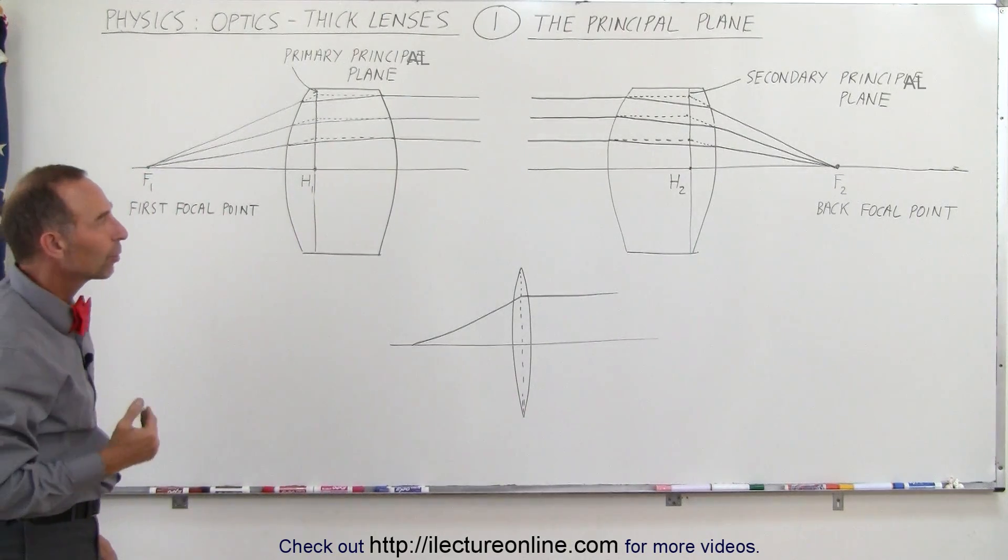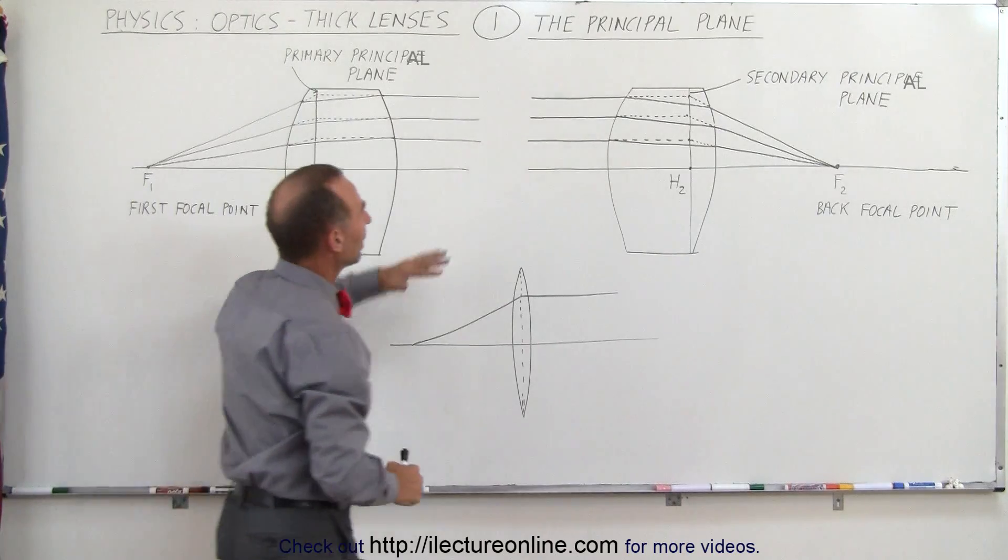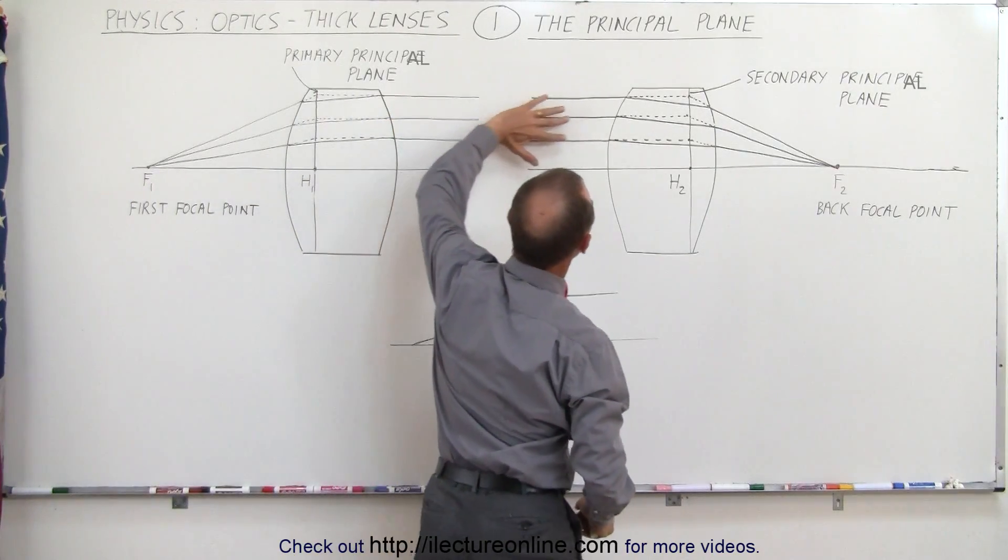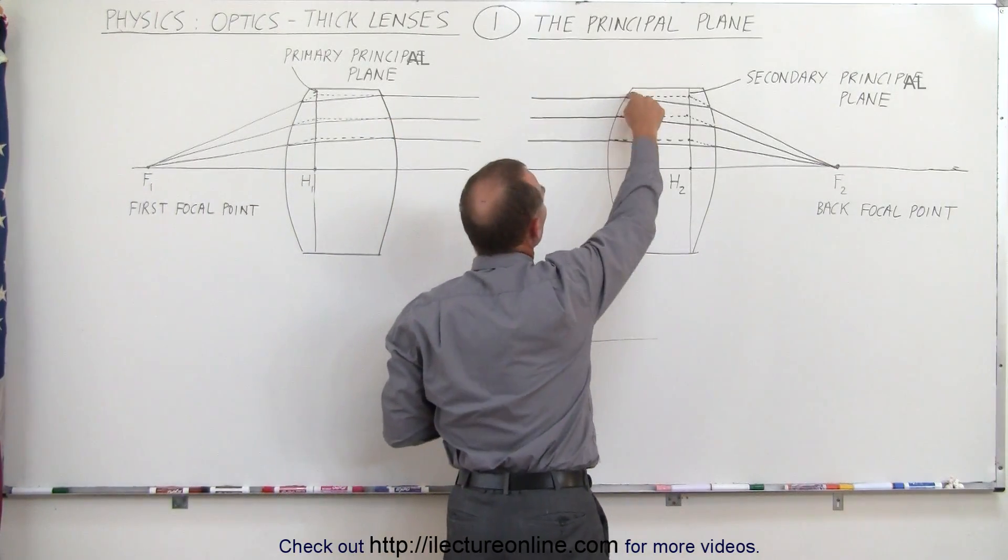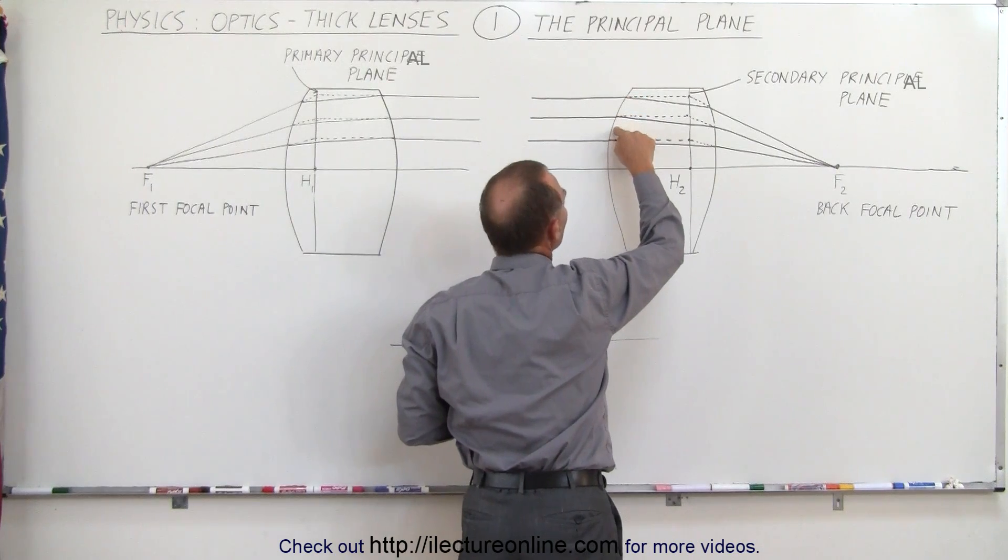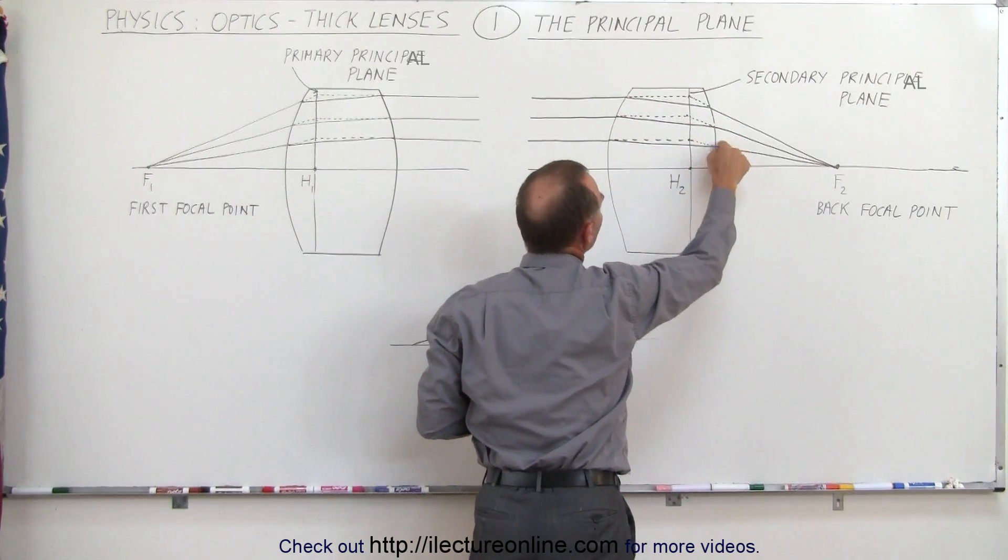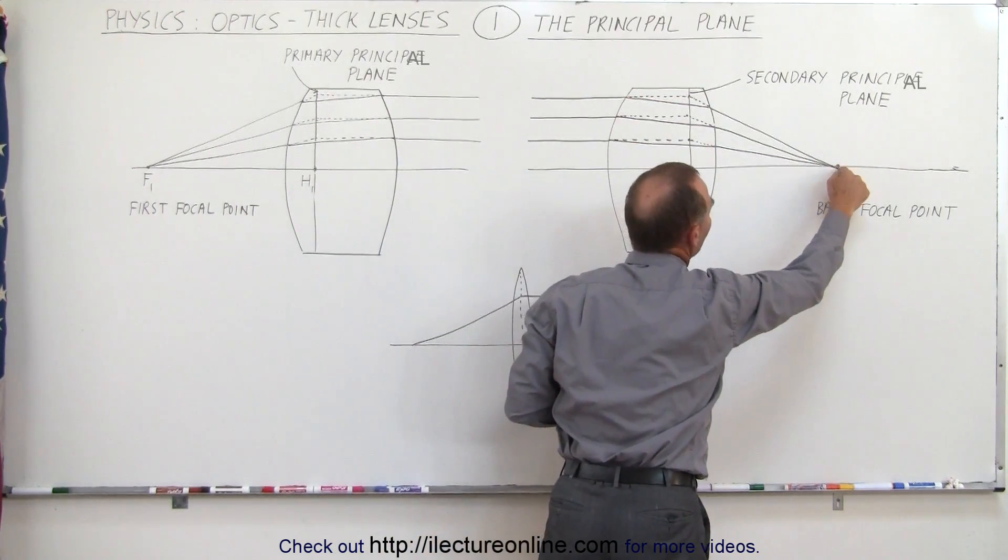We have a similar location on the back of the lens. If we draw parallel lines towards the lens, notice again the rays will refract on the first boundary, they will refract again on the second boundary, and eventually come together at this point.